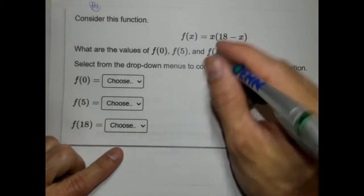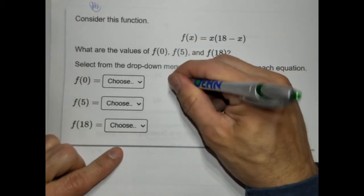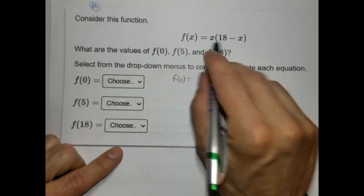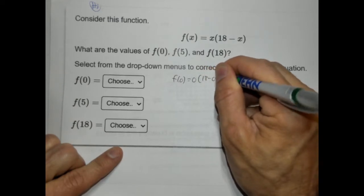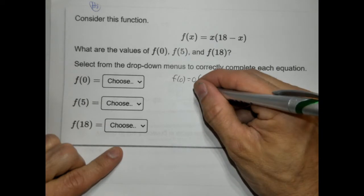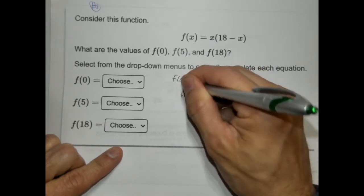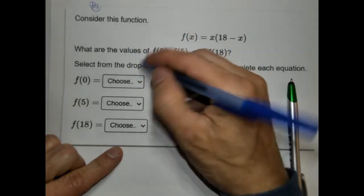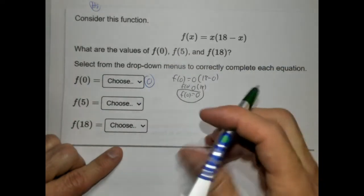Here's how I would solve this, again, on the scrap paper. You can tell almost each problem we're going to use our scrap paper. I'm going to write f(0). 0 is going to go over the x's. So 18 minus 0 is 18. So 0 times 18. And 0 times 18 is 0. So f(0) is 0. That's what you'd choose for this one here, because there's three options here.